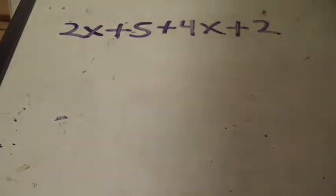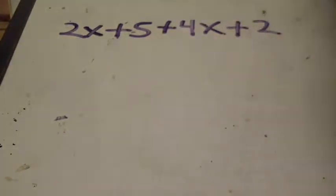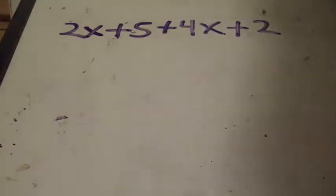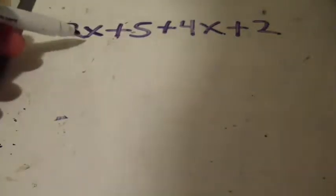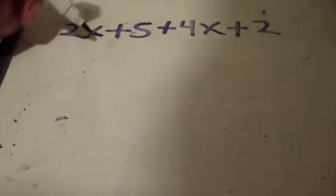And here's the first step. This reads 2x + 5 + 4x + 2. So this is not an equation because there's no equal sign, it's simply a statement. We can see right now we have four terms.